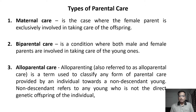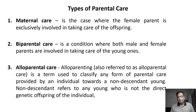Another very interesting type is alloparental care, also referred to as alloparenting. It is a term used to classify any form of parental care provided by an individual towards a non-descendant — any young who is not the direct genetic offspring of that individual. So alloparenting is where one individual takes care of a young one that is not its own offspring, though it is genetically related.